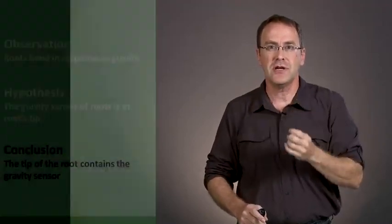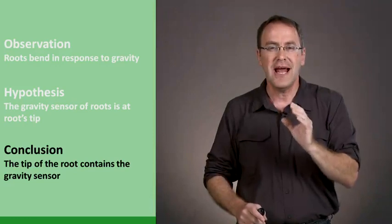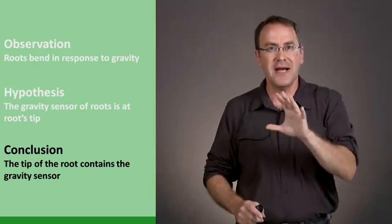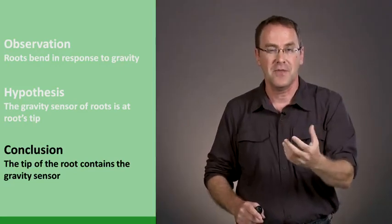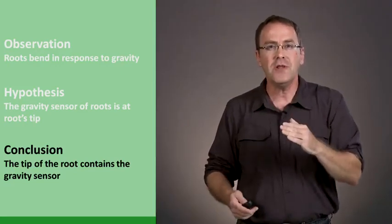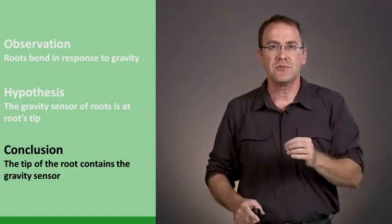So what's the conclusion of this experiment? That it's the tip of the root that has the gravity sensor. Now you might say, well that makes sense because that's where the cells are dividing. But actually, it was only if he damaged the very tip of the root that he got this response.